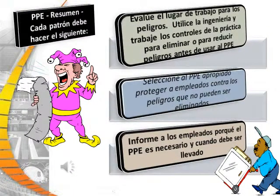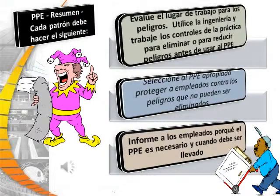Each employer must assess the workplace for hazards, use engineering and work practice controls first to eliminate and reduce hazards before resorting to personal protective equipment, select the appropriate PPE for hazards that cannot be eliminated, and inform employees why personal protective equipment is necessary and when it must be worn.